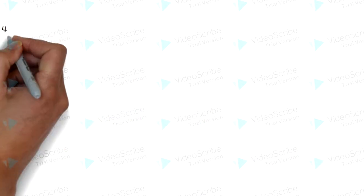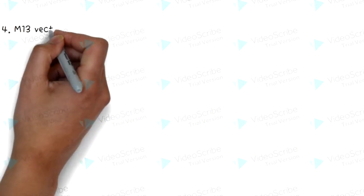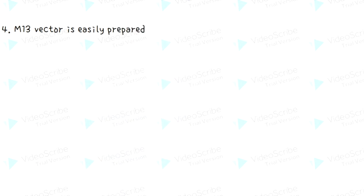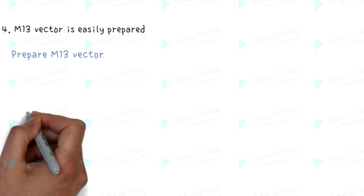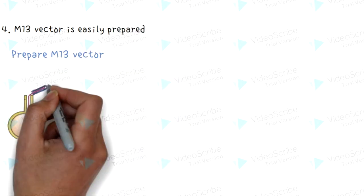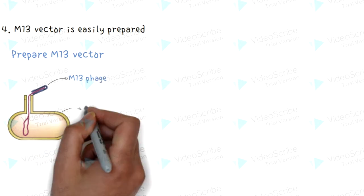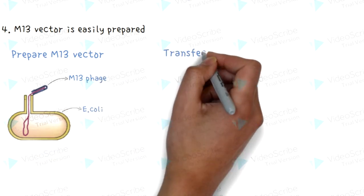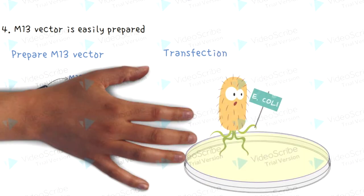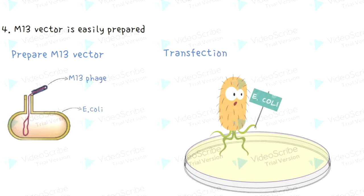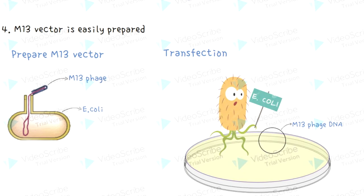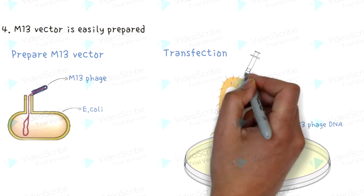Lastly, M13 vector is easily prepared. The M13 vector can be prepared by disinfecting E. coli cells. It can also be reintroduced via transfection — that is, artificially introducing M13 DNA into E. coli using different methods, for example, microinjection.